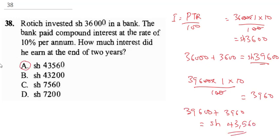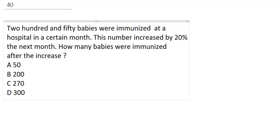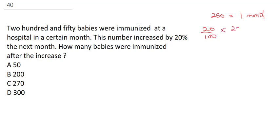As easy as that, you can solve any compound interest question. The next question says 250 babies were immunized at the hospital in a certain month. This number increased by 20% the next month. How many babies were immunized after the increase? If it was 250 babies in one month, then the increase is 20% of 250. Canceling zeros, this gives us 50. That means the total babies immunized was 250 plus 50, giving 300.